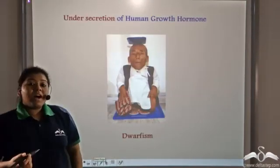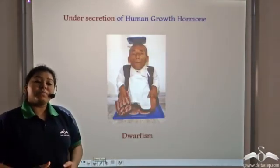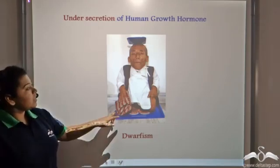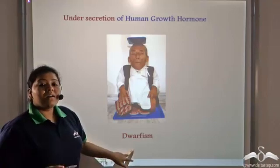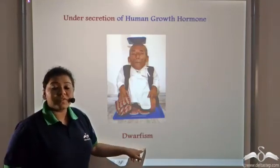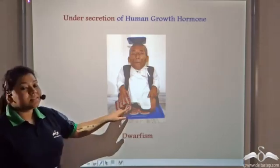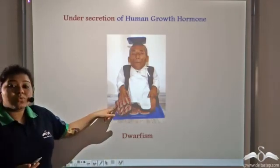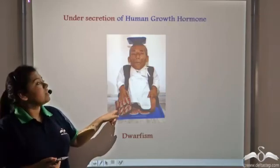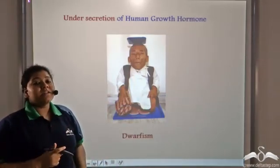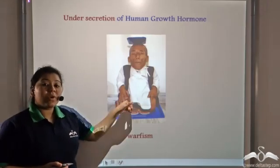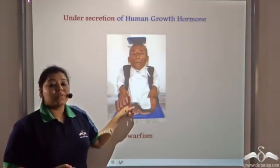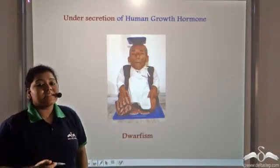Under-secretion of growth hormone would mean a lesser number of cell divisions. That causes a condition in the body known as dwarfism, when the person's growth becomes stunted. According to 2013's survey, this man is the shortest man on earth due to the under-secretion of growth hormone from the pituitary gland in the brain.